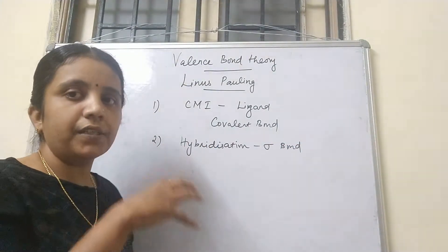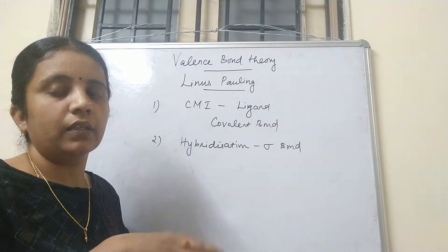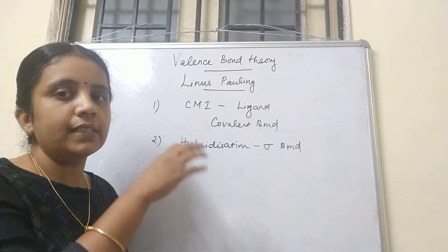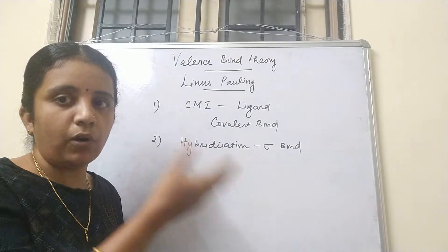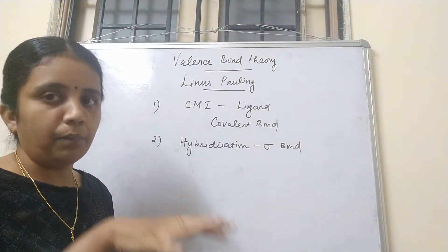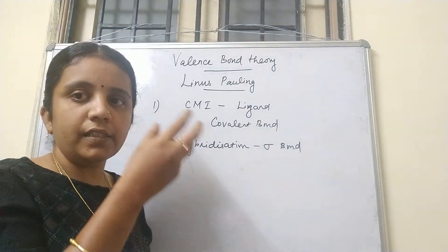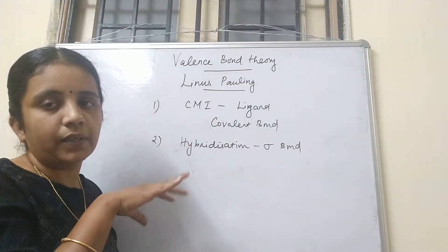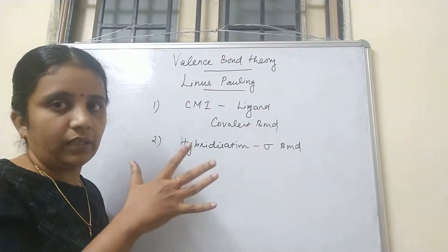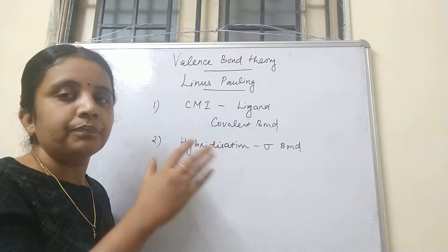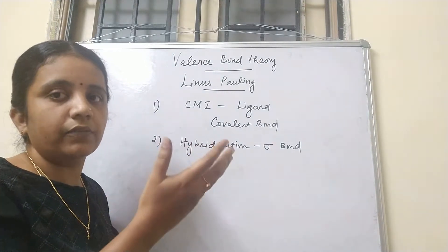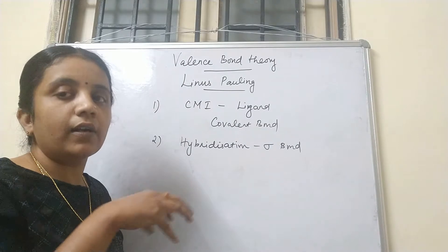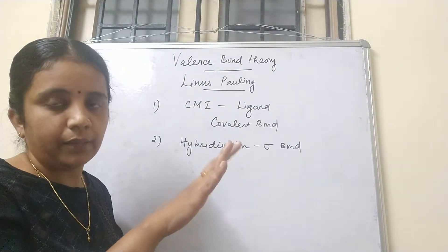What do you mean by coordination number? Coordination number is how many ligands form coordinate covalent bonds with the central metal ion. According to the coordination number, the central metal ion keeps that many vacant orbitals ready. For example, if six cyanide ion ligands approach the central metal ion, the central metal ion must have six vacant orbitals.